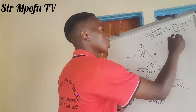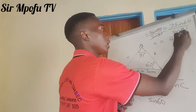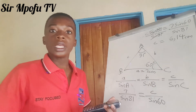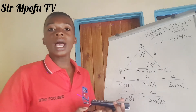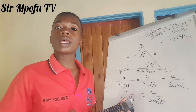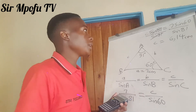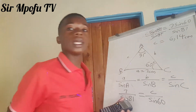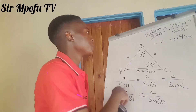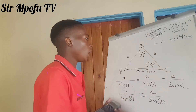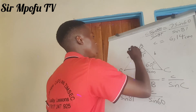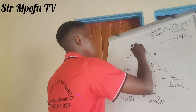C is equal to 6.14 centimeters. In most cases, I advise you to do this: punch 7 times sine 60, then press equals, then divide by sine 81, to avoid unnecessary mistakes. So this is equal to 6.14.